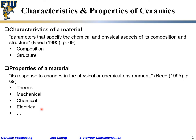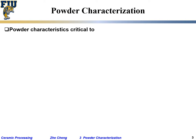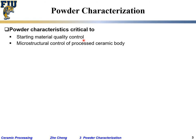Here we are more interested in characteristics — its composition and structure — and how we are going to characterize them using different tools. Powder characterization is critical to starting material quality control. In a production setting, you control the particle size, the composition purity, and also control the microstructure and control of the final ceramic body.